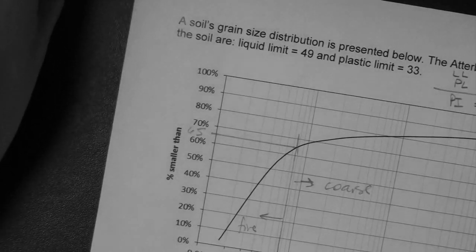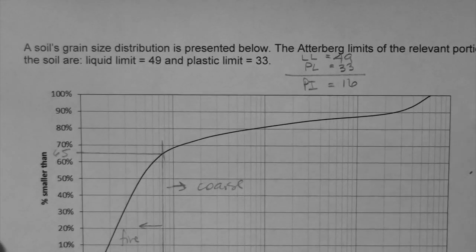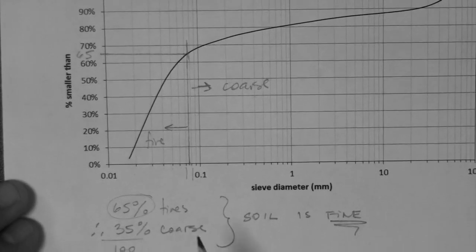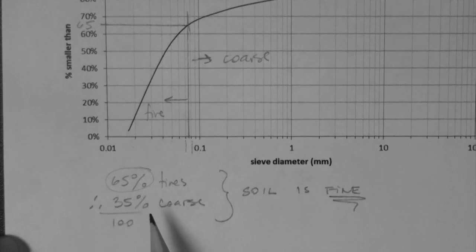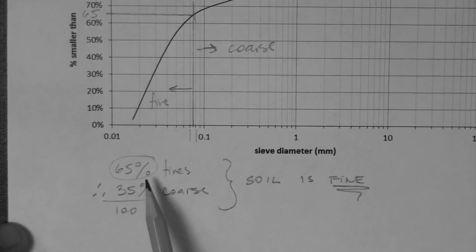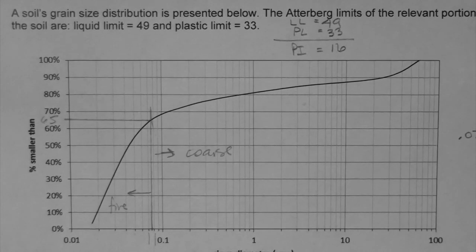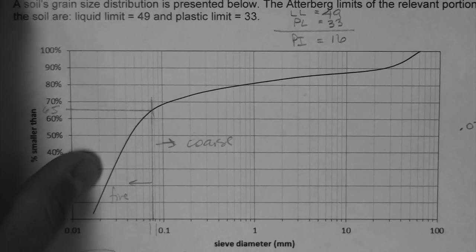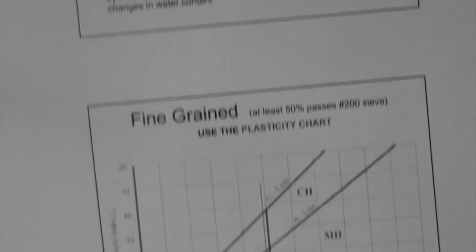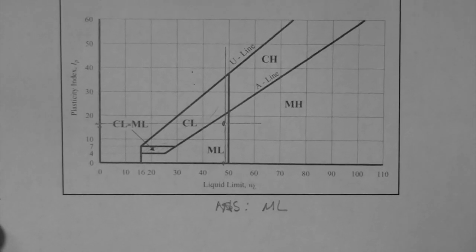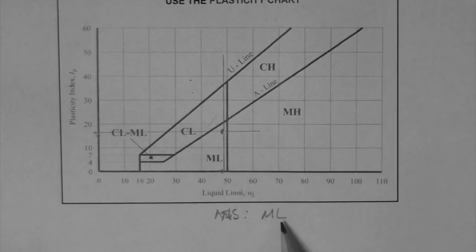But notice, again, the Atterberg limits were given for the finer portion. In this region, we found that the percentage of fines is more than 50, 65% in this case. Meaning that we can neglect the rest of the grain size distribution for classification purposes. And simply use the plasticity chart to characterize our soil. So, it is an ML, because we plotted the point here.